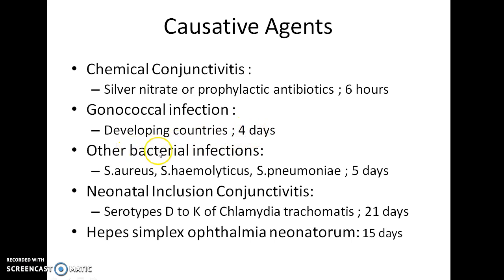Other bacterial causes of Ophthalmia Neonatorum are Staphylococcus aureus, Streptococcus haemolyticus, and Streptococcus pneumoniae. The incubation period in this case is usually 5 days.